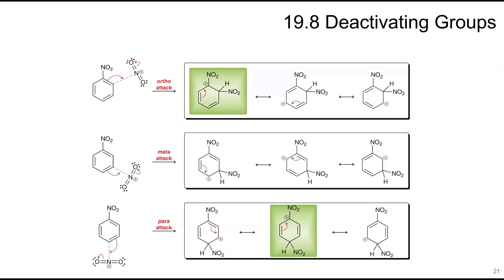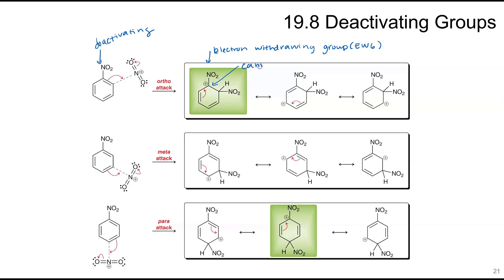Deactivating groups have a different effect. With a nitro group, which is deactivating, adding another nitro group generates a positive charge in the sigma complex. Because the existing nitro group is electron withdrawing, it further withdraws electron density, which does not stabilize — it destabilizes the intermediate — at the ortho and para positions. We don't want the positive charge being destabilized further by an electron-withdrawing group. If we offset it and place the new group at the meta position, that is preferred.